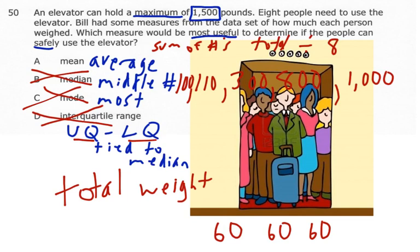Well that seems like it would be more helpful, because if we knew the mean, we could just do 8 times whatever it was, and that would tell us if it's over 1,500 or not. So I'm going with A, the mean. And once again that reason is because the mean uses the total in its calculation. Take the sum of the numbers.